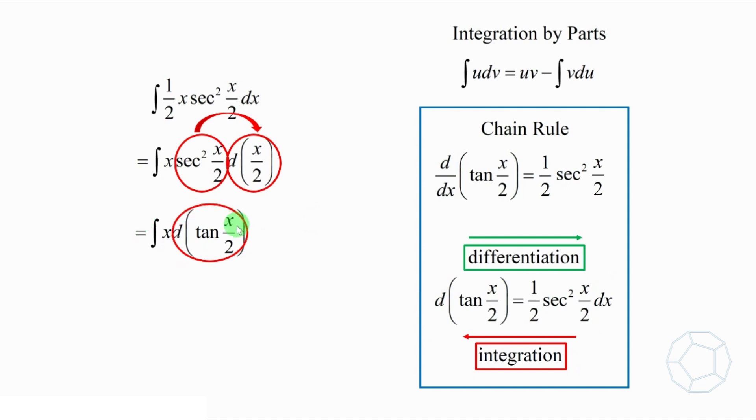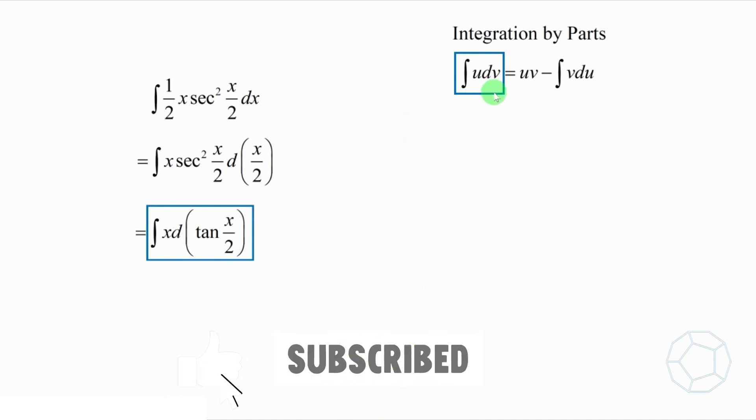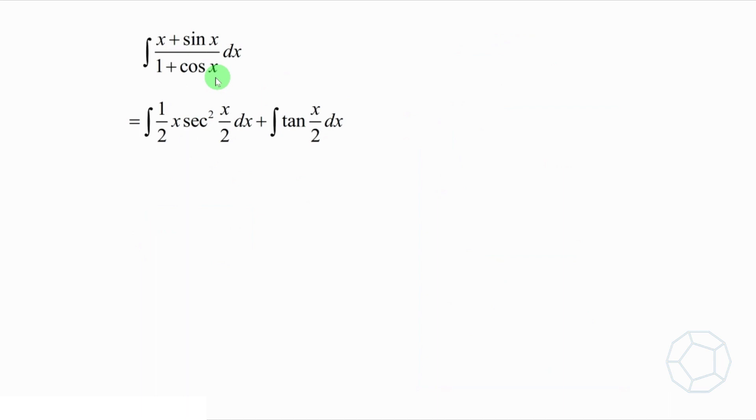Okay, the first integral is integrate x d(tan x over 2). This is the form of integrate u dv we are looking for. Now, let's go back to the original integral. It's equal to integrate x d(tan x over 2) plus integrate tan x over 2 dx.